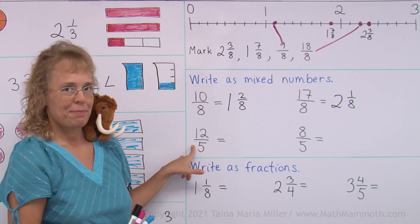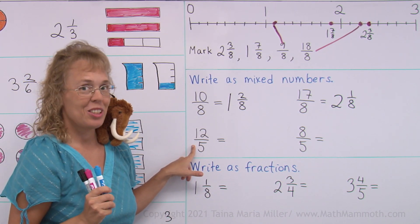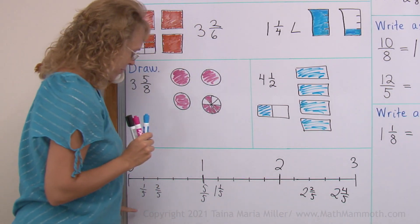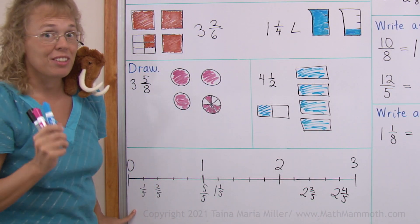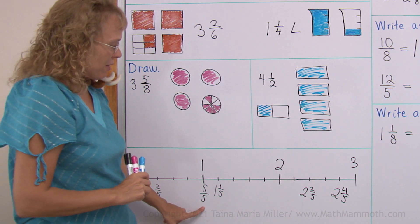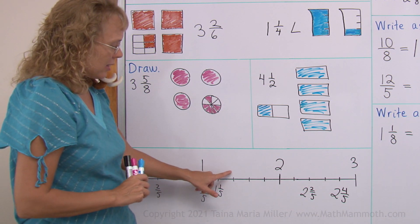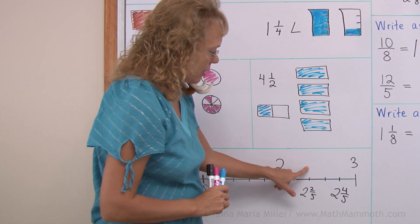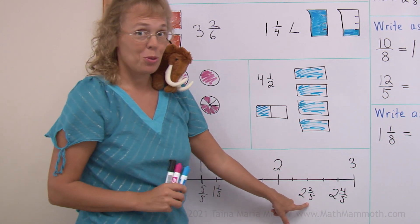12 fifths. I have a number line for this too. We could use this number line where we had fifths. 5 fifths is here, then 6, 7, 8, 9, 10 fifths, 11, 12 fifths. It is this one here, 2 and 2 fifths.